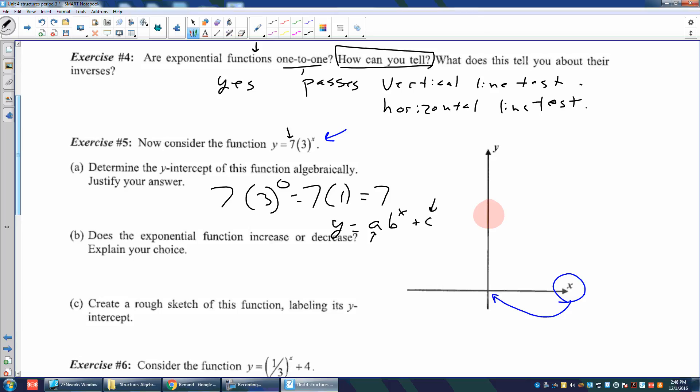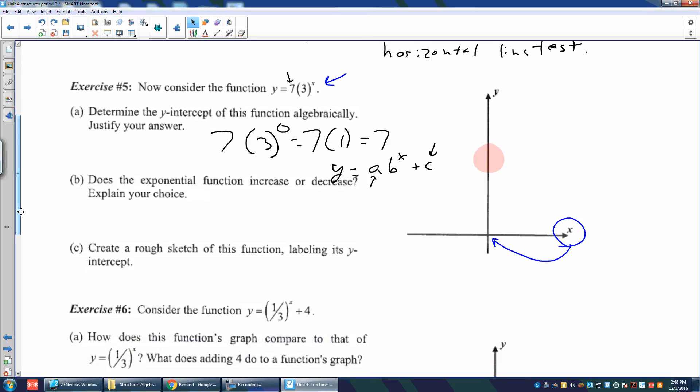Let's write a better form of the equation. Y equals a times b to the x plus c. That moves it up and down. That moves the y-intercept up and down. It also makes it accelerate faster. Does the exponential function increase or decrease? It is increasing. Do you remember from eighth grade why we knew it was increasing? It's increasing because b is greater than one. The base is greater than one. Create a rough sketch of this function labeling its y-intercept. We said the y-intercept was seven. I'm going to move that down. That's seven. It's increasing.